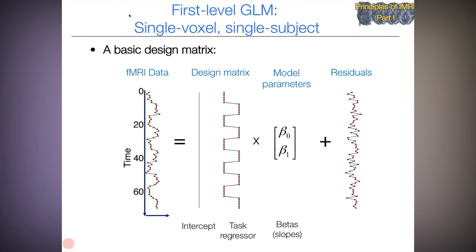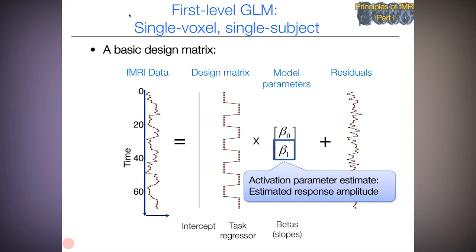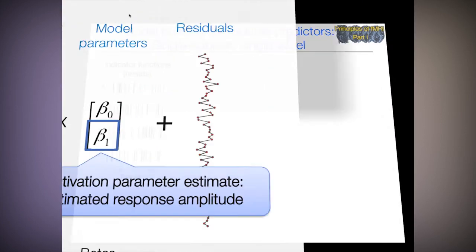This is the first level of GLM for a single voxel and a single subject, a basic design matrix. What we care about here is the activation parameter estimate, or the beta for the task regressor in a very simple design.